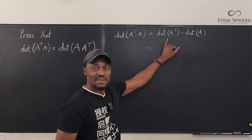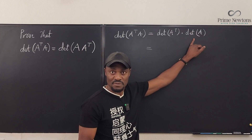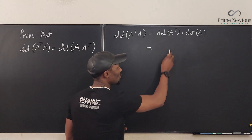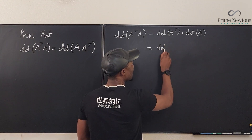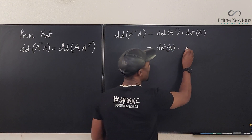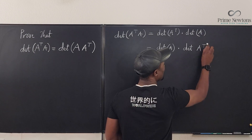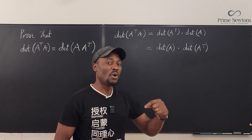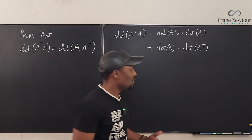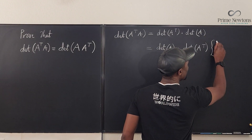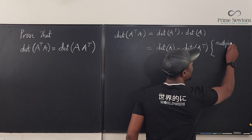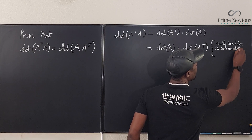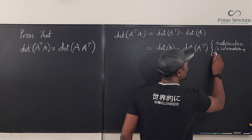Now, the determinant of A transpose and the determinant of A are both real numbers. We know that multiplication of real numbers is commutative, so we can switch the order to get: the determinant of A multiplied by the determinant of A transpose. You have to justify this — the reason is the commutative property of multiplication in ℝ, the real numbers.